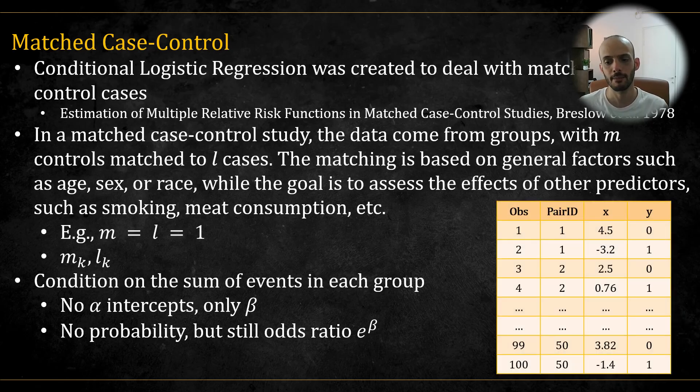In this table, you can see an example of such data with m and l equal to 1, also known as 1 to 1 matching. And it's also possible to have different m's and l's per groups. In this type of model, we condition on the total number of events or cases in each group, treating it as known. As a result, in the course of the analysis, the intercept terms will disappear from the model and we won't be able to estimate them. Without the alpha intercepts, we can't compute total probability or absolute probability, but we can still compute the odds ratio. So we can still compute what is the relative probability of getting a 1, comparing two different individuals. And we'll explore this more thoroughly later in this video.